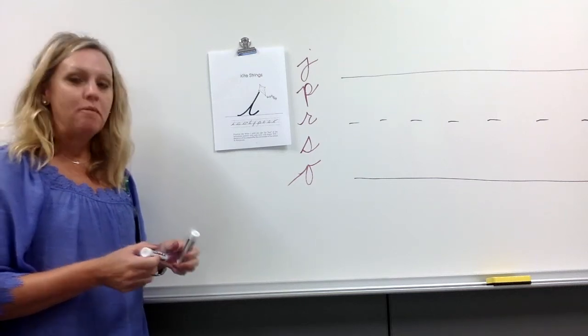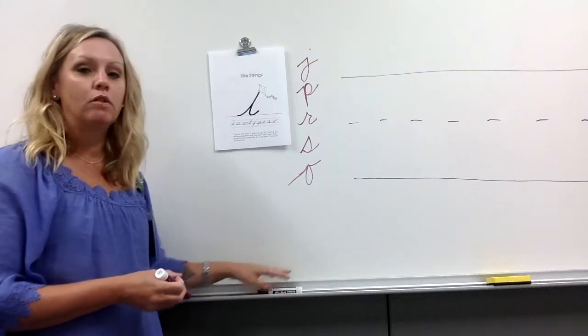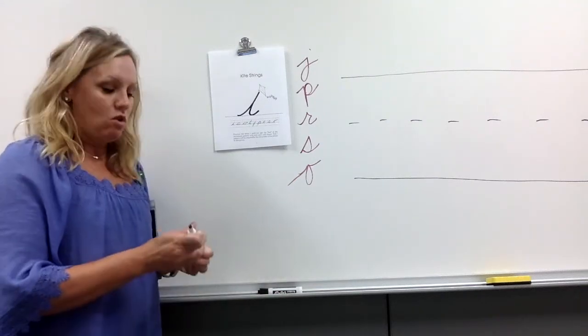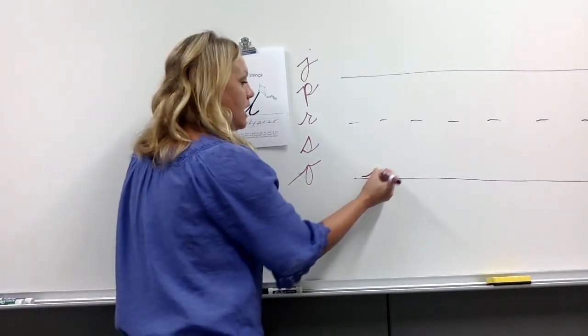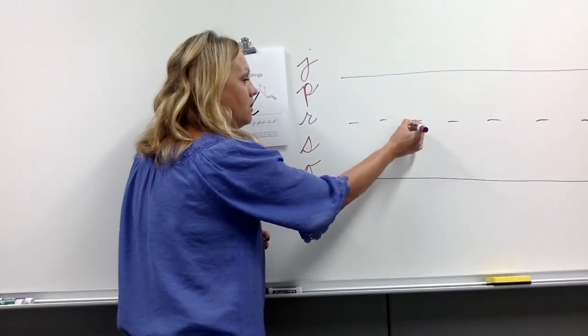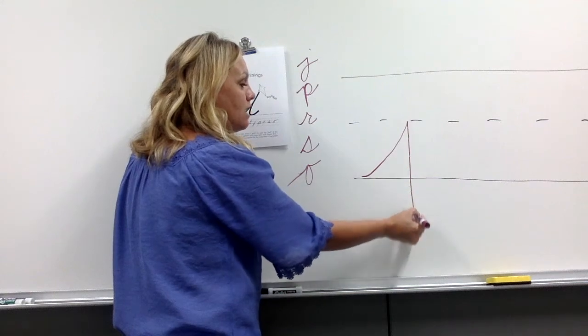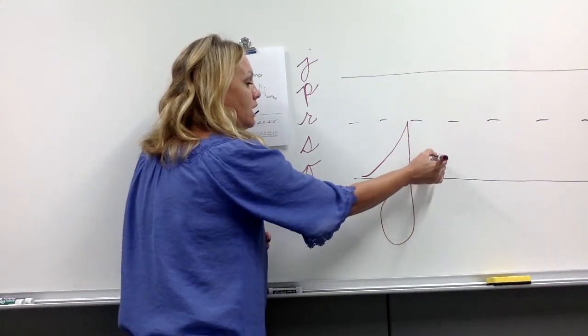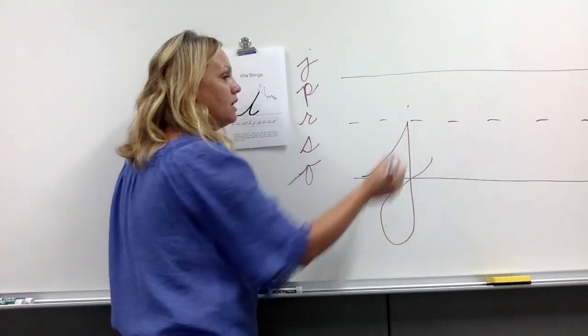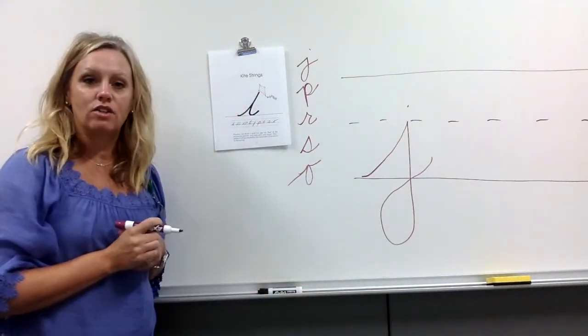So we remember on all of our letters, where do we start? We start at the bottom writing line. For J, you're going to start at the bottom writing line. You're going to kite string up to the middle divider, pull straight down, go below the line, loop, release, lift, and dot. There's our J.